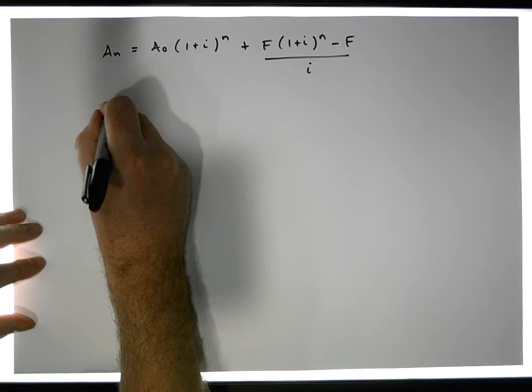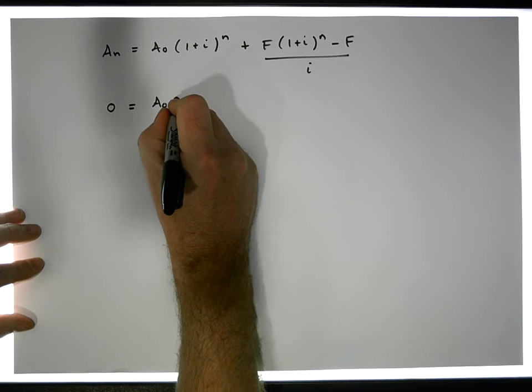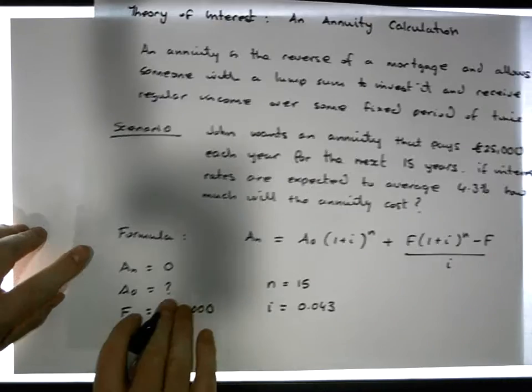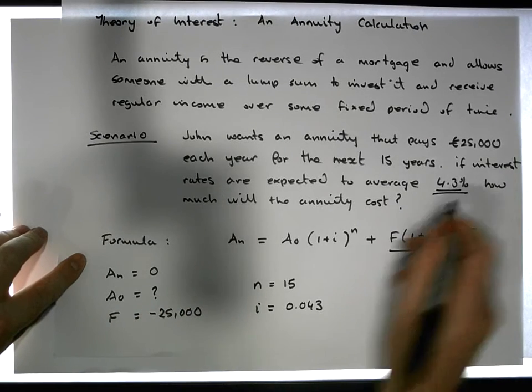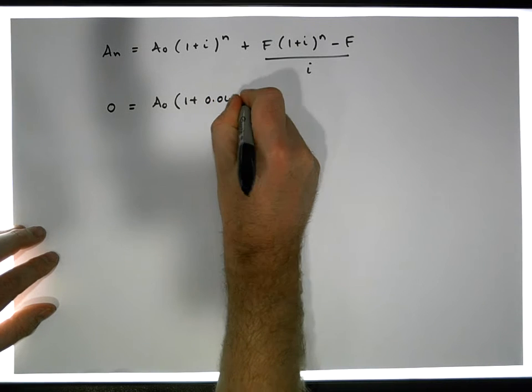So we have zero is equal to, we don't know what A0 is, this is the cost of the annuity. So it's A0 times (1 + interest rate), and we said that the interest rate is going to be 4.3 percent, so it's 0.043, raised to the power of n, the duration of this particular annuity which is over 15 years, so let me put 15 in here.